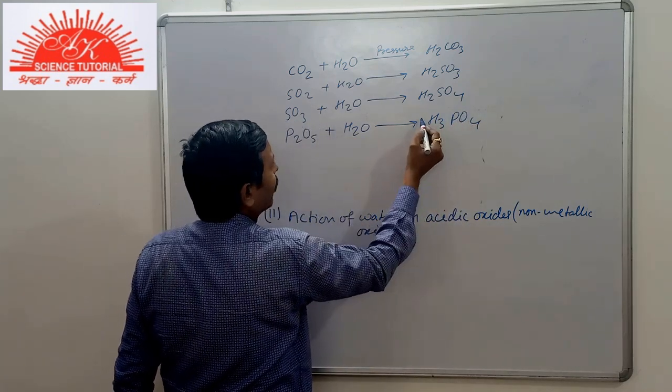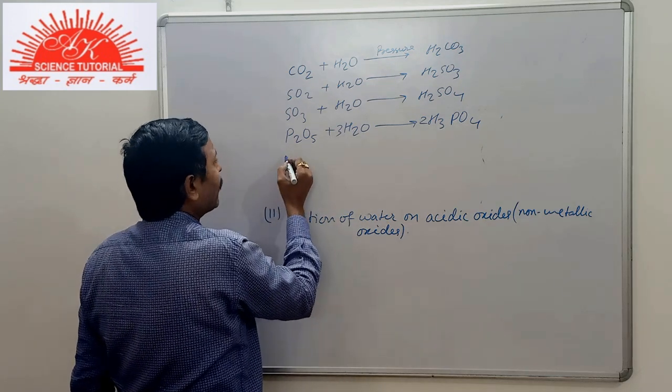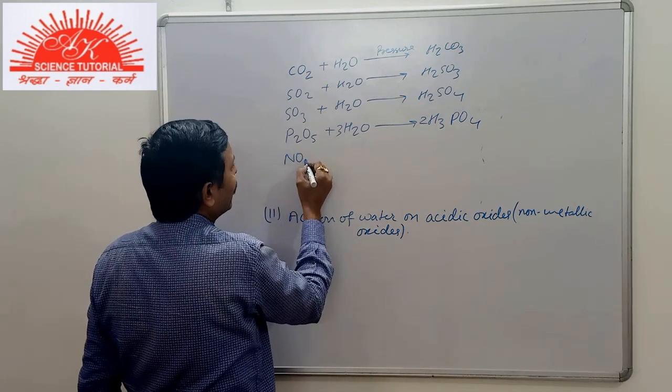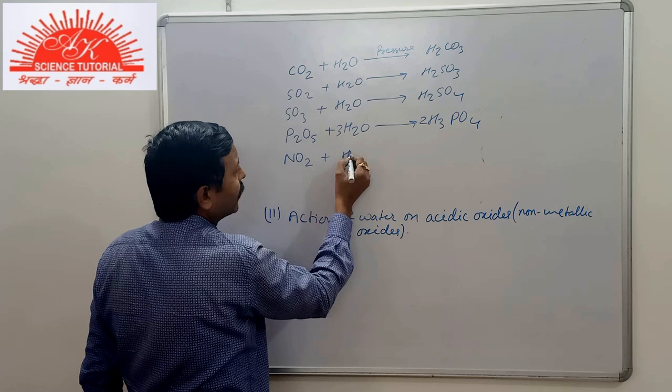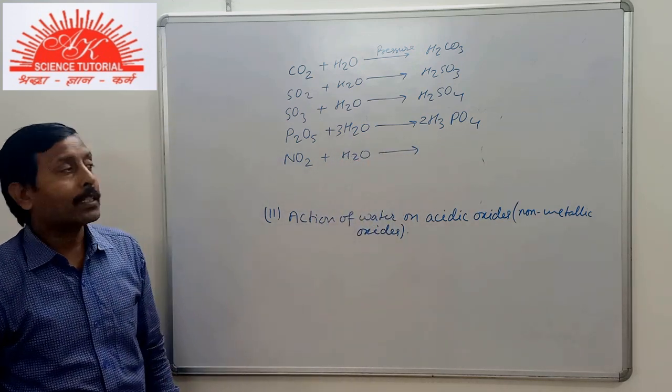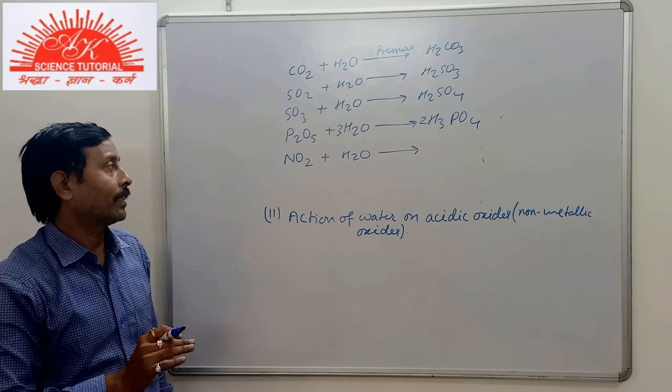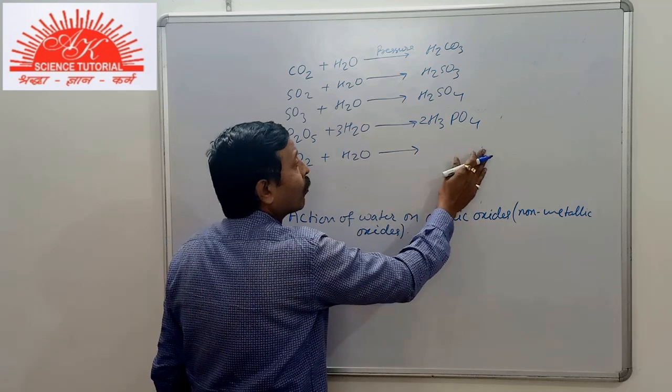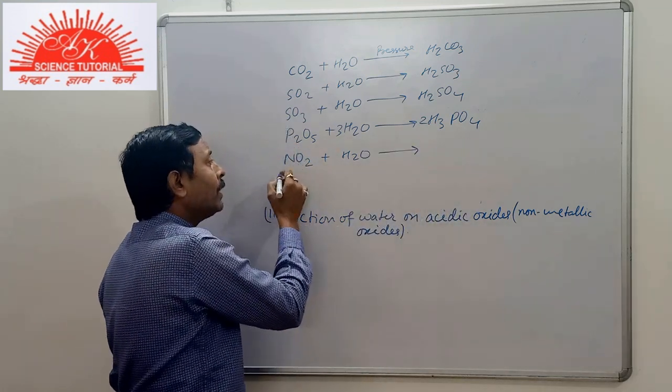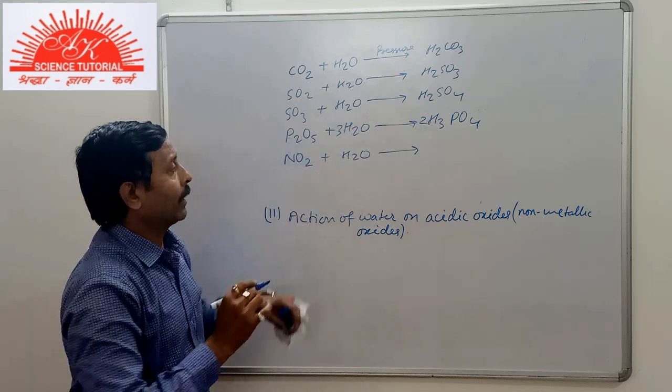Now, we can take here this part. You see that the non-metallic oxide which dissolves in water to form its respective acid is known as acid anhydride of that acid. Anhydride means without water. So these are acid anhydrides of their respective acids.